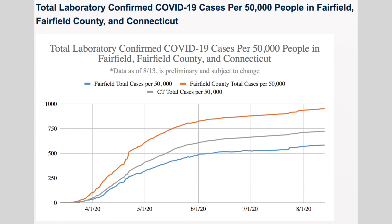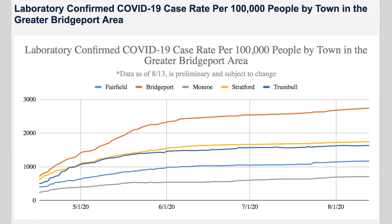Our next graph is one we started way back in March. It was a way to compare where we were with the town versus the county and the state, by breaking it down per 50,000 people. That made it easier to do some comparison with numbers and see some trends across the county, the town, and the state. Below that, started a little bit later, is all the surrounding towns and their cases per 100,000 population — again, a way to compare all of the towns together on one graph.